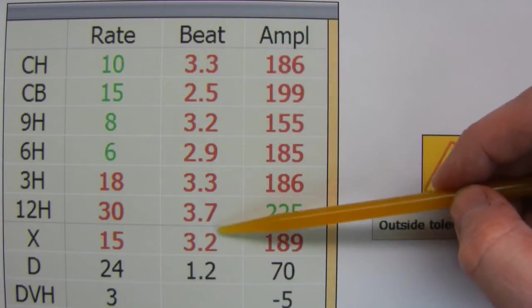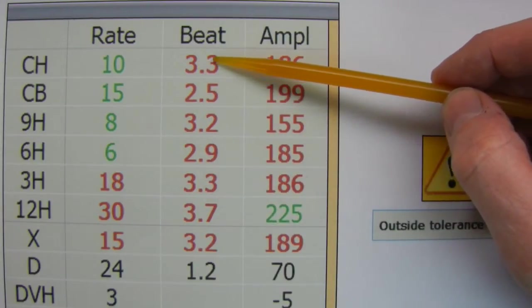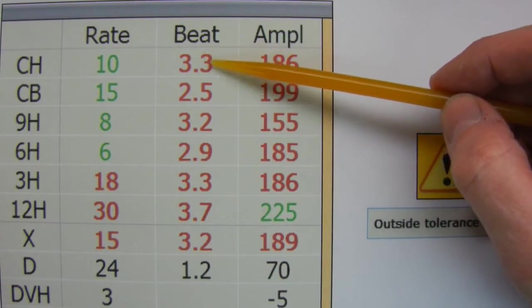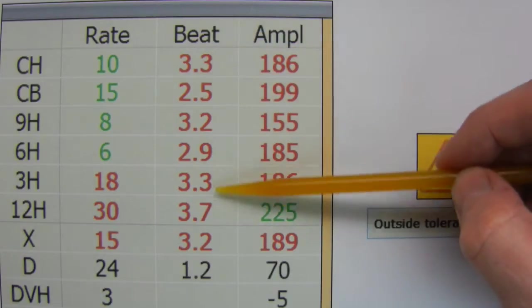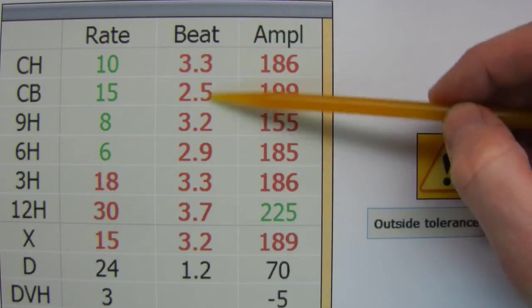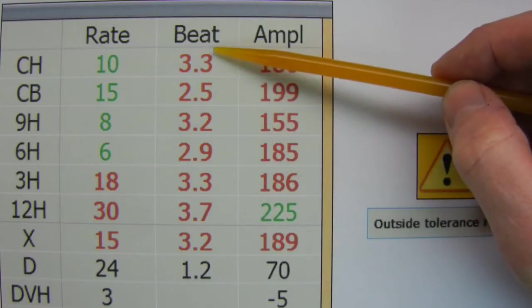And what we want is for this value to be absolutely as low as possible. They can't all be zero, that's impossible. But they can be 0.1, 0.2, 0.3, that sort of value. And anything above 0.5 is out of beat.